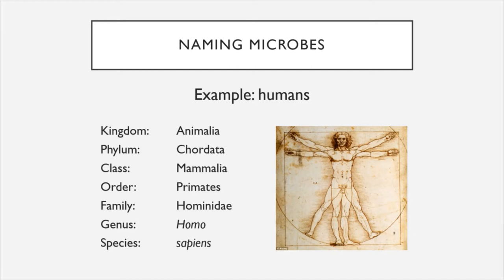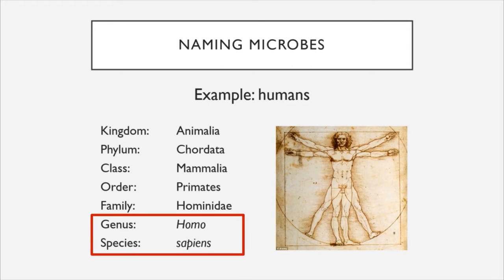At the broadest level, humans are classified into the kingdom Animalia because we are animals. Phylum is Chordata, meaning we are animals that have backbones and spines. Our class is Mammalia, meaning we are mammals. Our order is Primates, our family is Hominidae, and the genus and species is where we really get to the name of the organism. Humans belong to the genus Homo and the species sapiens, so humans are called Homo sapiens.